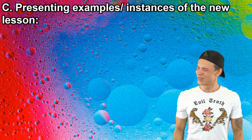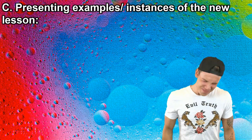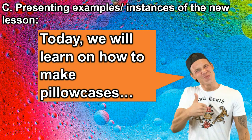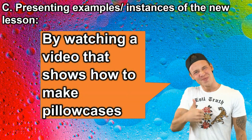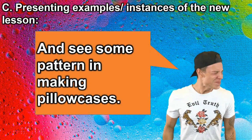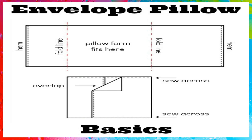The third part of our lesson is presenting examples or instances of the new lesson. Today we will learn how to make pillowcases by watching a video and seeing some patterns. Here is an envelope pillow pattern. Even if you don't have a background in sewing, you can imitate it because the illustration is very simple.